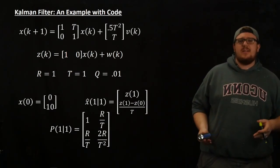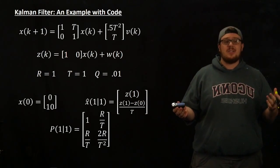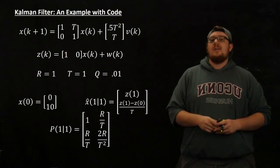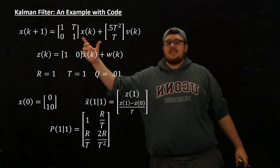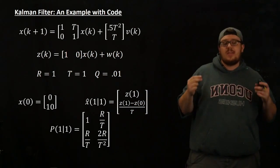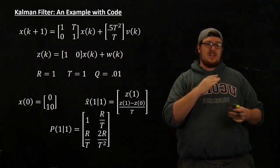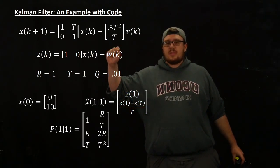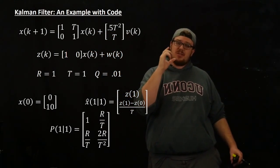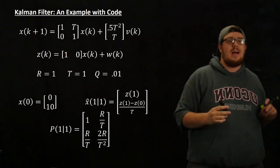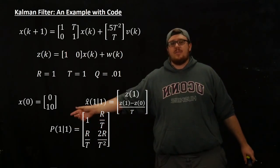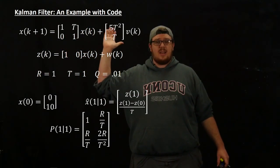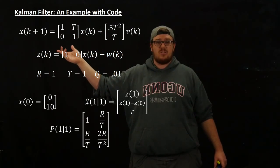So this example is what's called a white noise acceleration model or nearly constant velocity model of straight line motion. What you see here is we have x of k which is going to literally denote the x position of a car or whatever, just something that's going to be moving, and also the velocity. So it's a two dimensional vector of position and velocity. Basically this is the state matrix that shows a linear velocity, a straight line motion velocity.